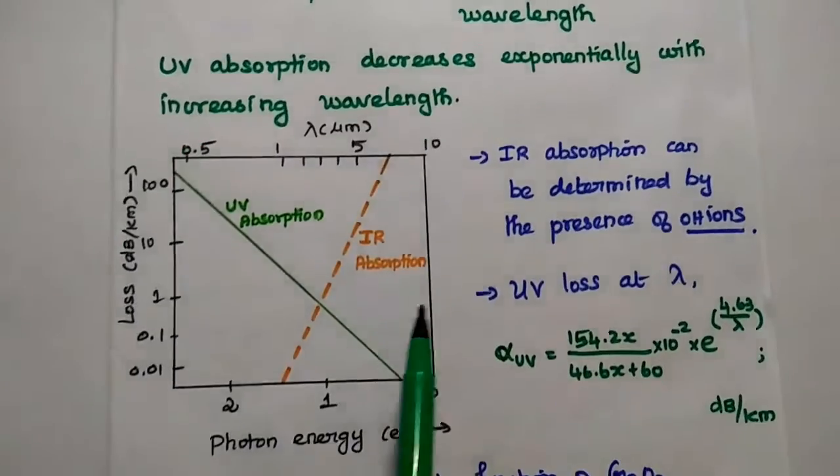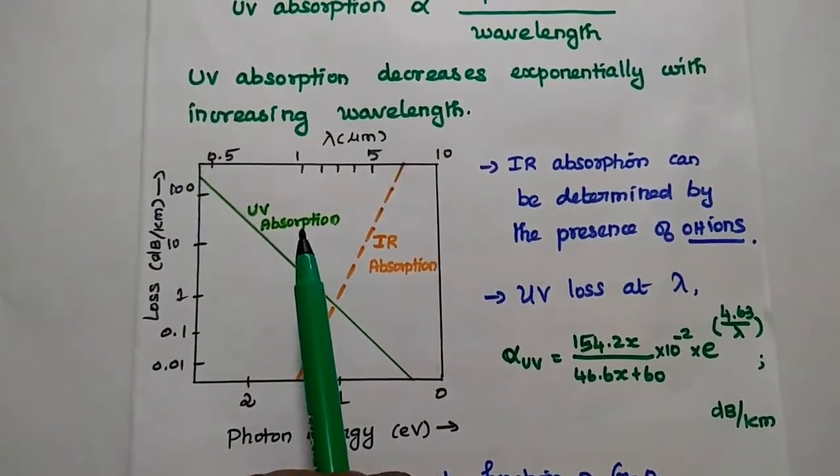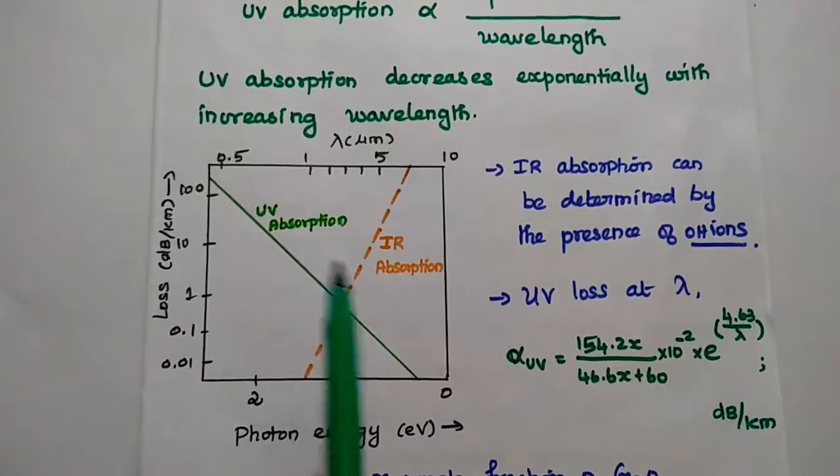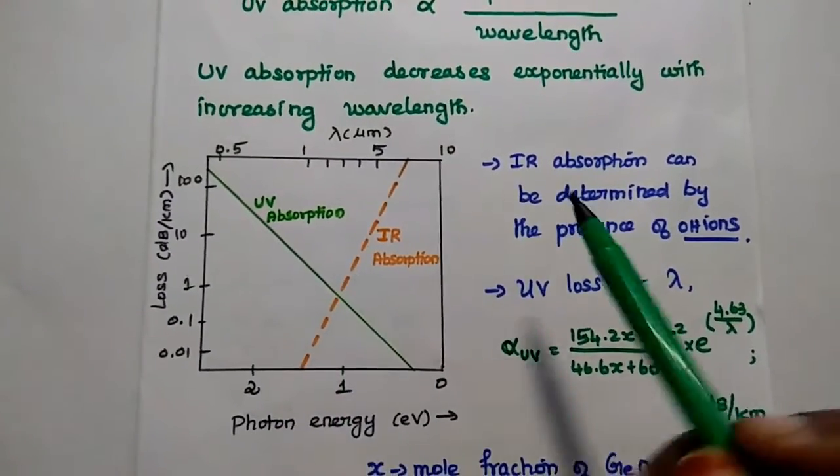That's what given in this diagram. Here, the UV absorption loss is decreased exponentially with increasing this wavelength.